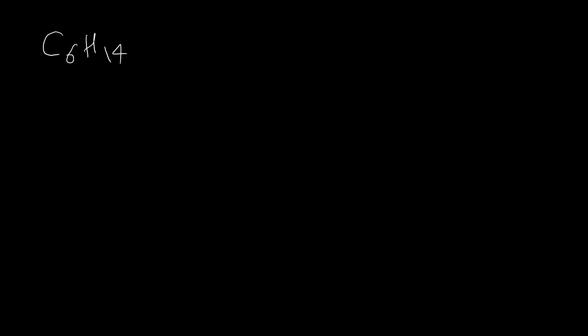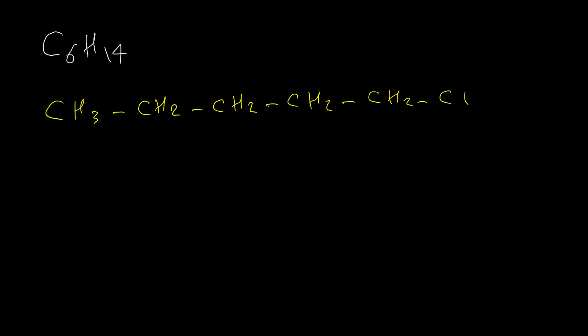Let's derive all isomers for hexane. The easiest way to draw isomers is to start with the normal alkane. We have six carbons, so the first isomer is six carbons in one chain: CH3-CH2-CH2-CH2-CH2-CH3. We can also draw this as a skeletal structure with six carbons in one chain.